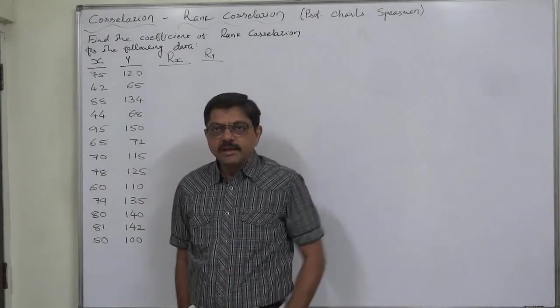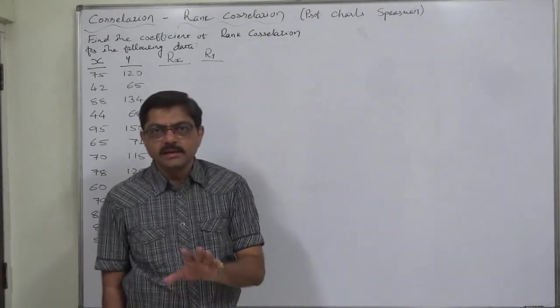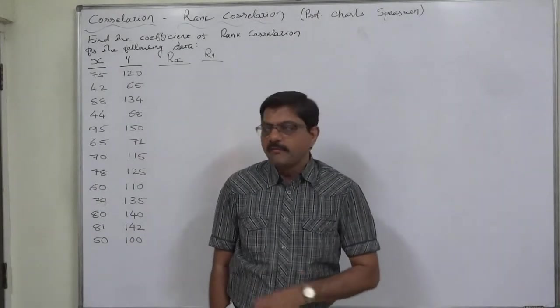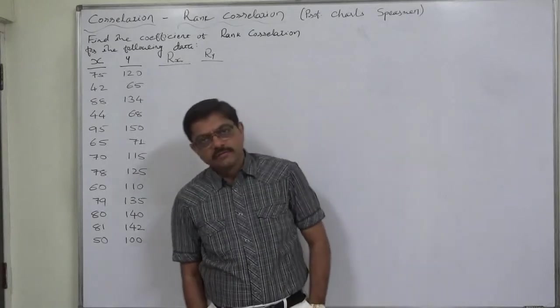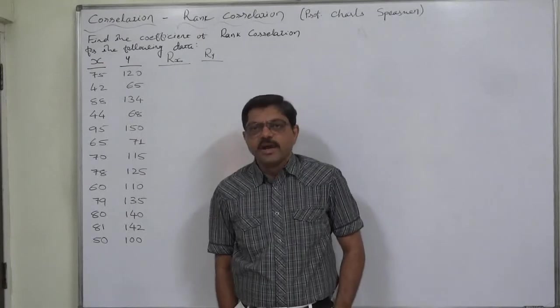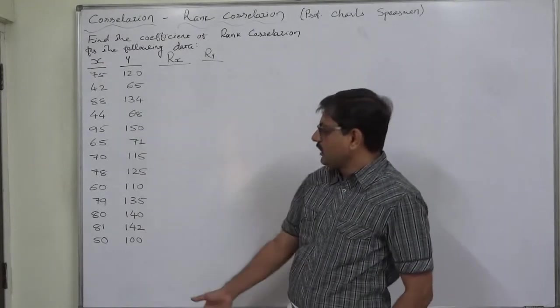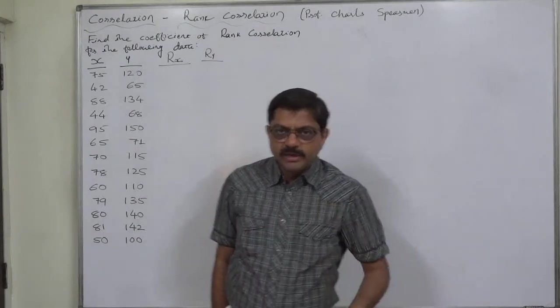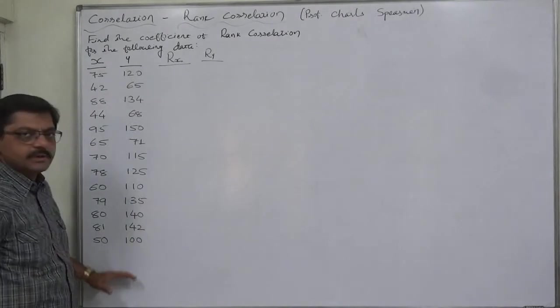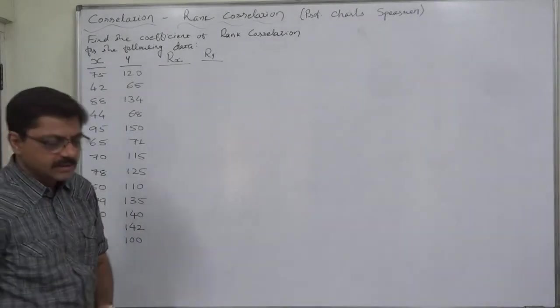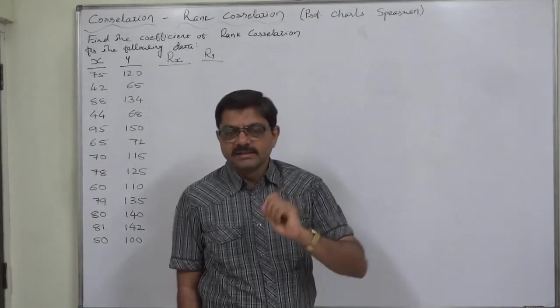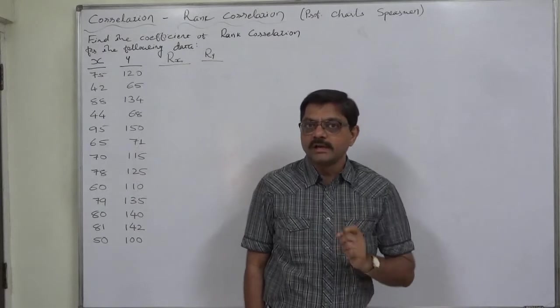As in the previous lecture we have already discussed that normally the rank correlation is used to study the qualitative data. Then why are we going to study rank correlation with a very normal statistical data? Why should we not use the method of Carl Pearson? Because for this particular data, Carl Pearson's method of calculating the coefficient of correlation can easily be used.